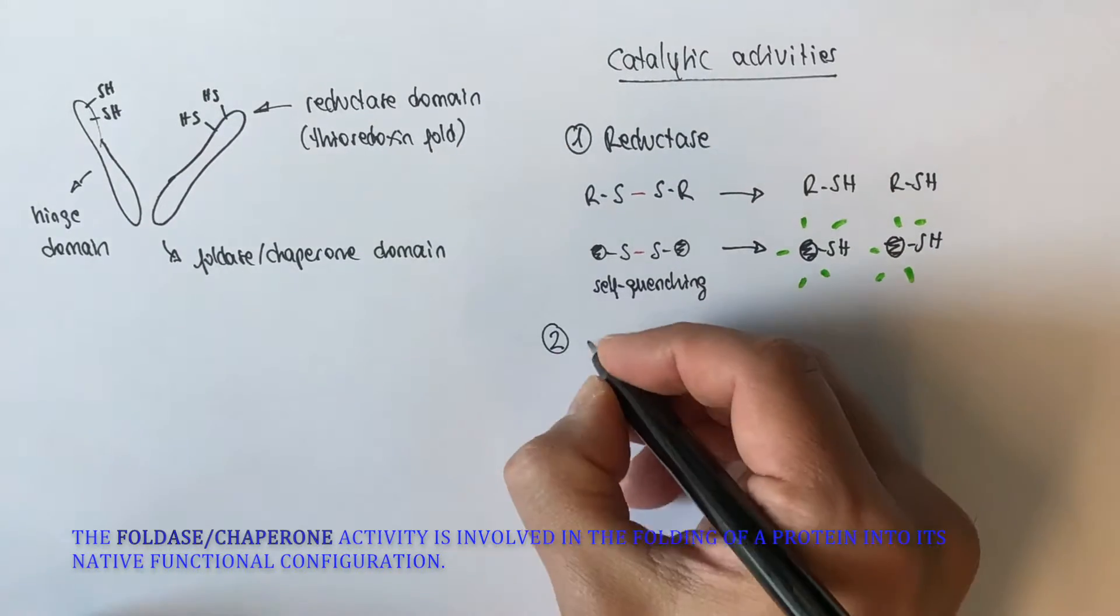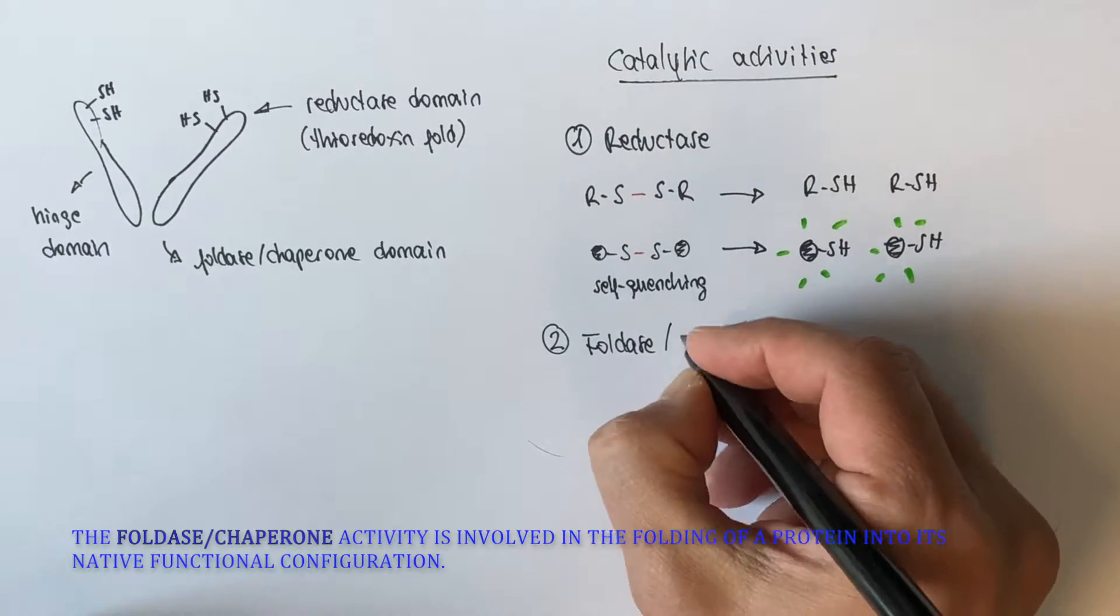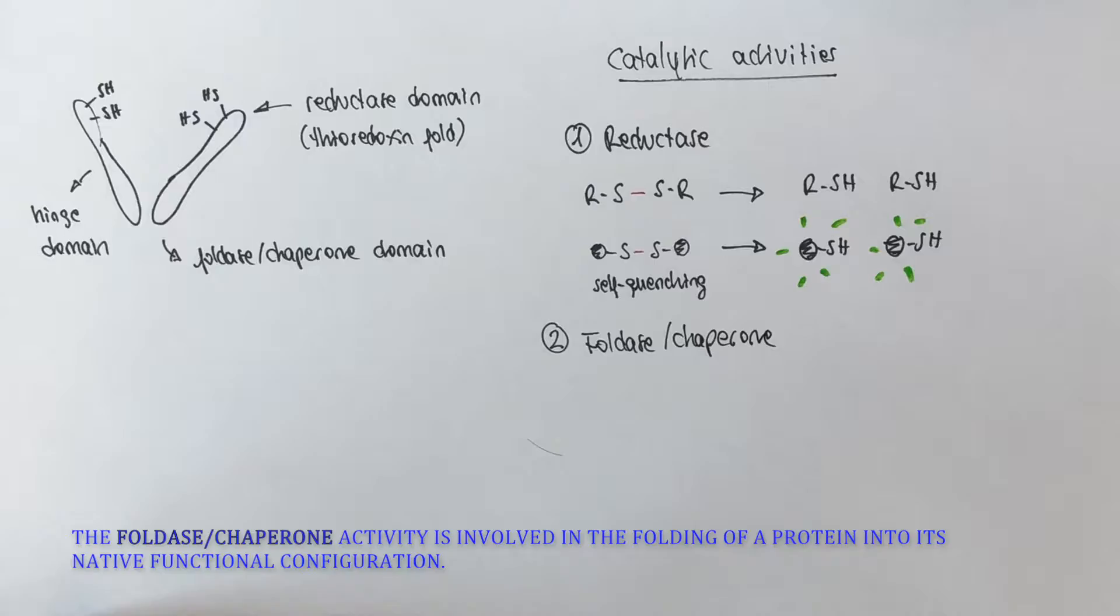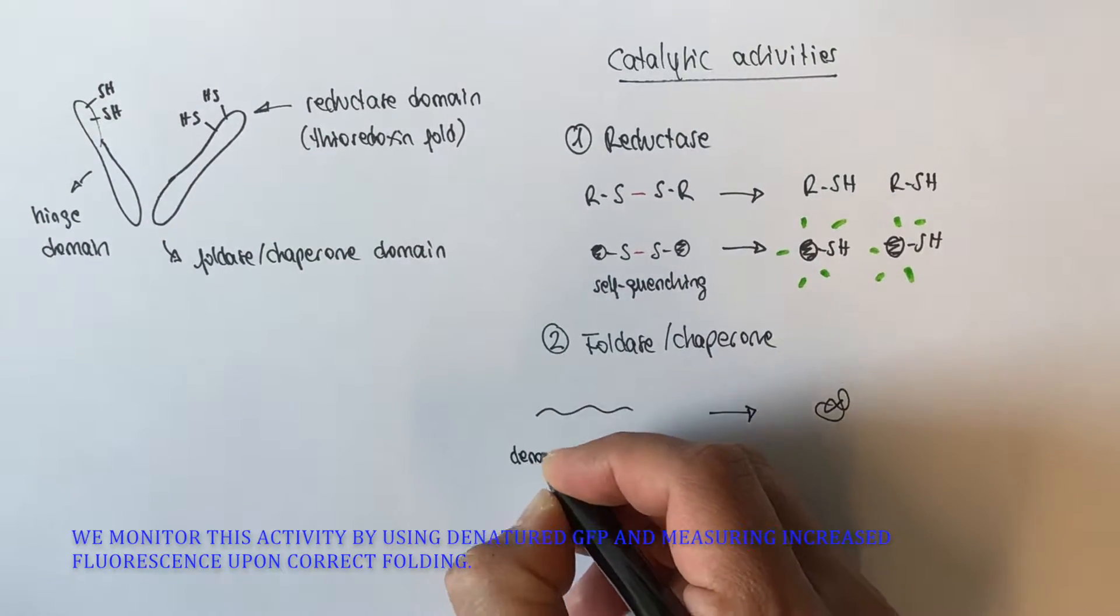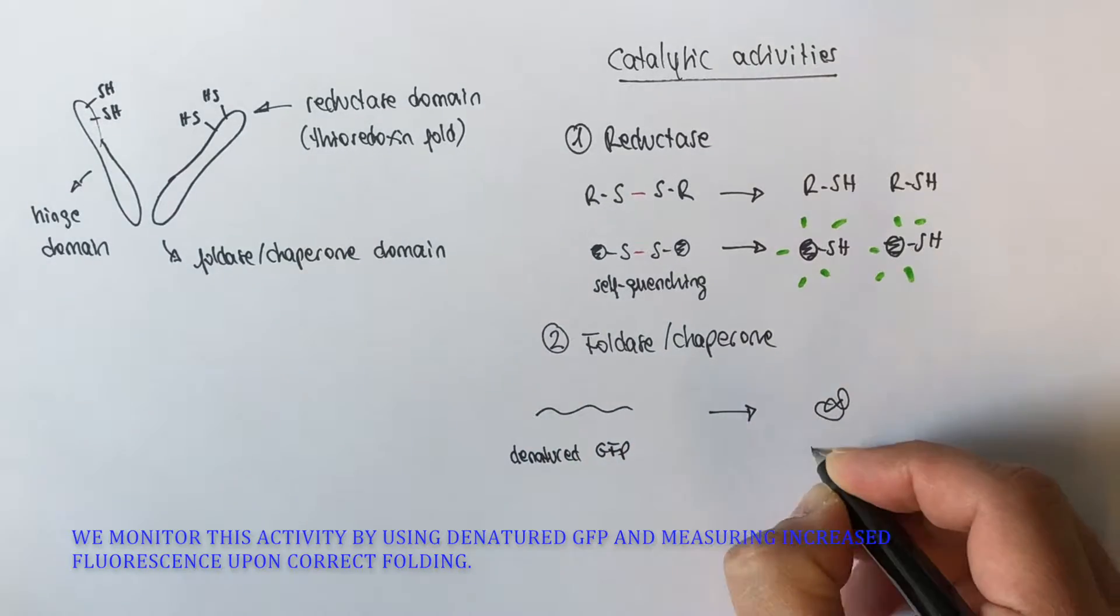The chaperone or foldase activity is involved in the folding of the native protein into its native conformation. We monitor this activity by an increased fluorescence signal of the native GFP that acquires its native conformation.